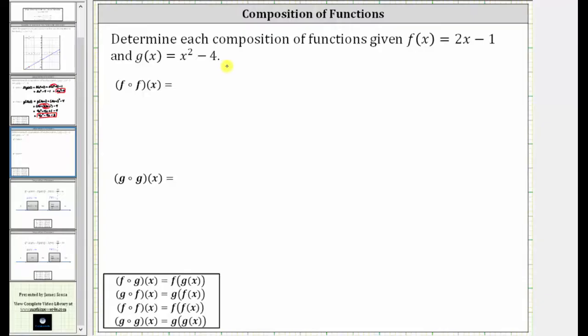We want to determine each composition of functions given f of x equals 2x minus 1 and g of x equals x squared minus 4. We have f of f of x and g of g of x. Notice here we're composing a function with itself. This may seem odd, but the process is exactly the same.